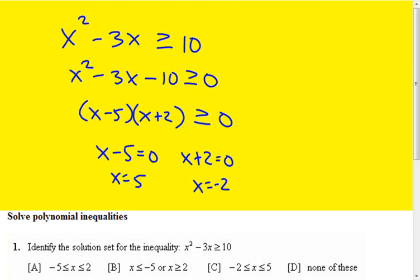These two are critical points. We want to put those on the number line. The critical points, because it's greater than or equal to, are included.